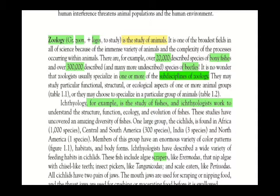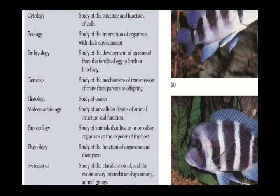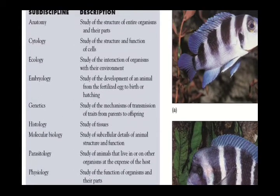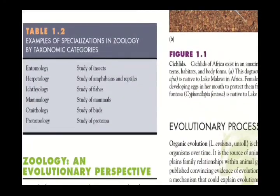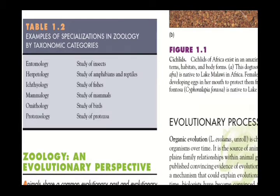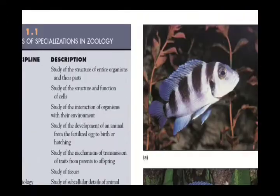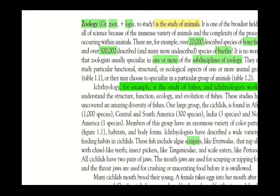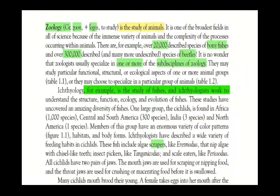We can see specializations in Tables 1.1 and 1.2. For example, a zoologist studying cytology studies the cell, an entomologist studies insects, and an ichthyologist studies fishes. Ichthyology, the study of fishes, involves understanding the structure, function, ecology, and evolution of fishes. These are examples of how zoology is divided into sub-disciplines.